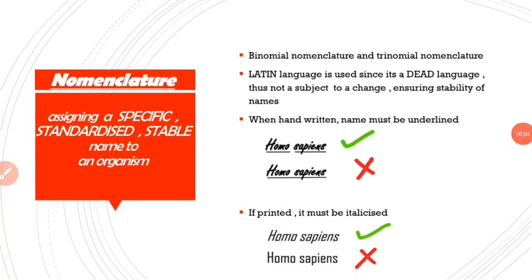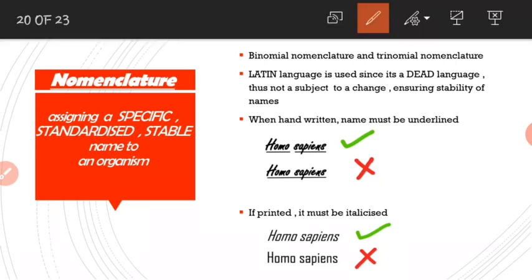Moving on to nomenclature. Nomenclature is the assigning of a specific, standardized, and stable name to an organism or species. The scientific name must be specific — it should not be repeated or given to another species. It must be standardized, meaning universally recognized, and stable, meaning not subject to change with time or place.